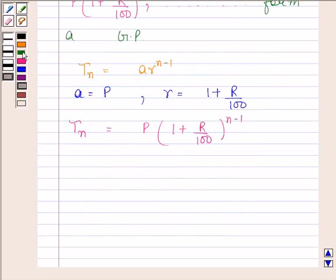As we have to find the 11th term, therefore N is equal to 11. And thus, T₁₁ is equal to P into 1 plus R by 100 to the power 11 minus 1.